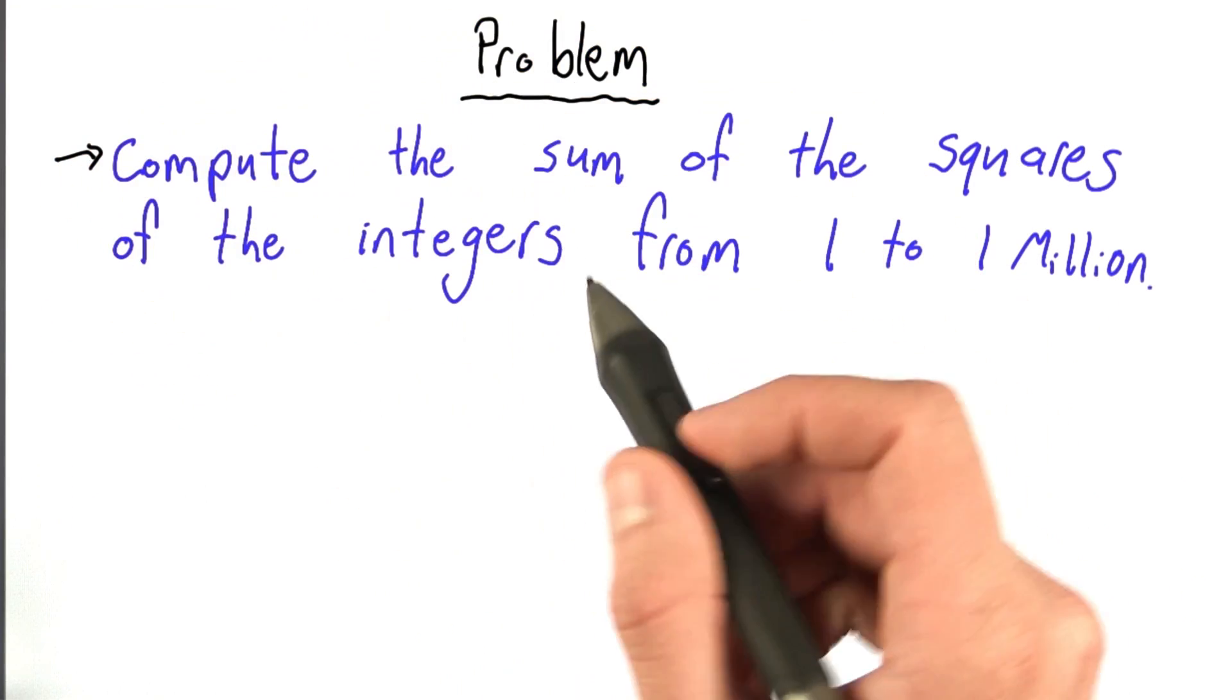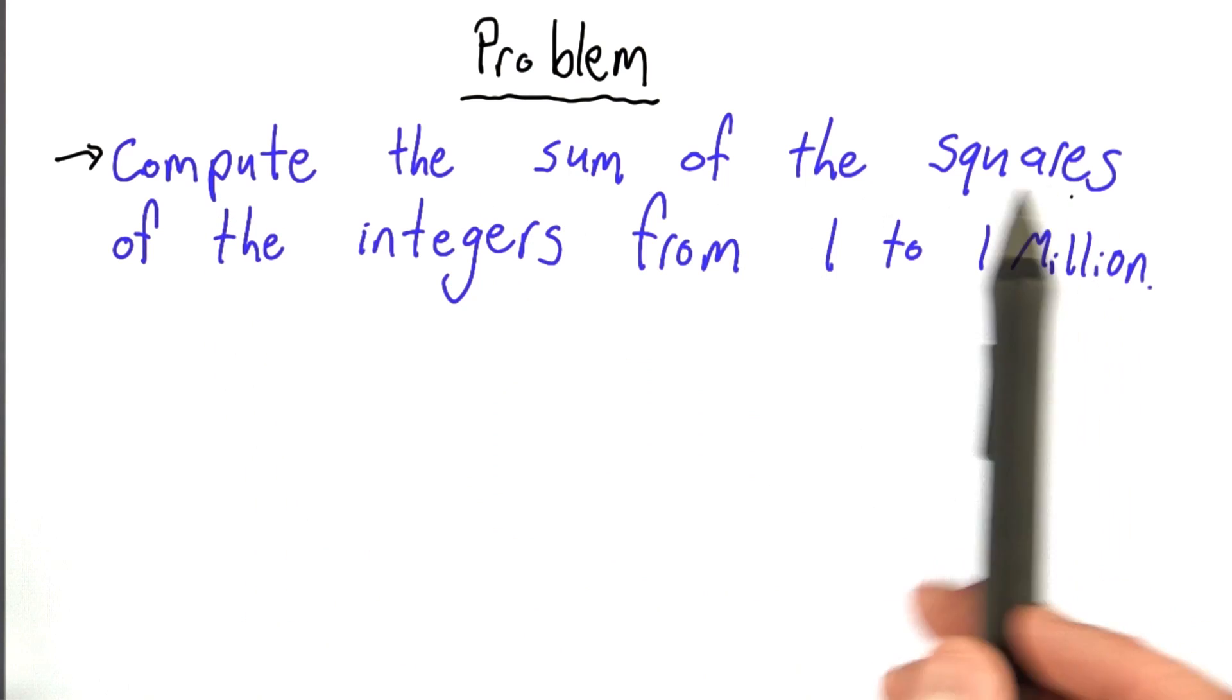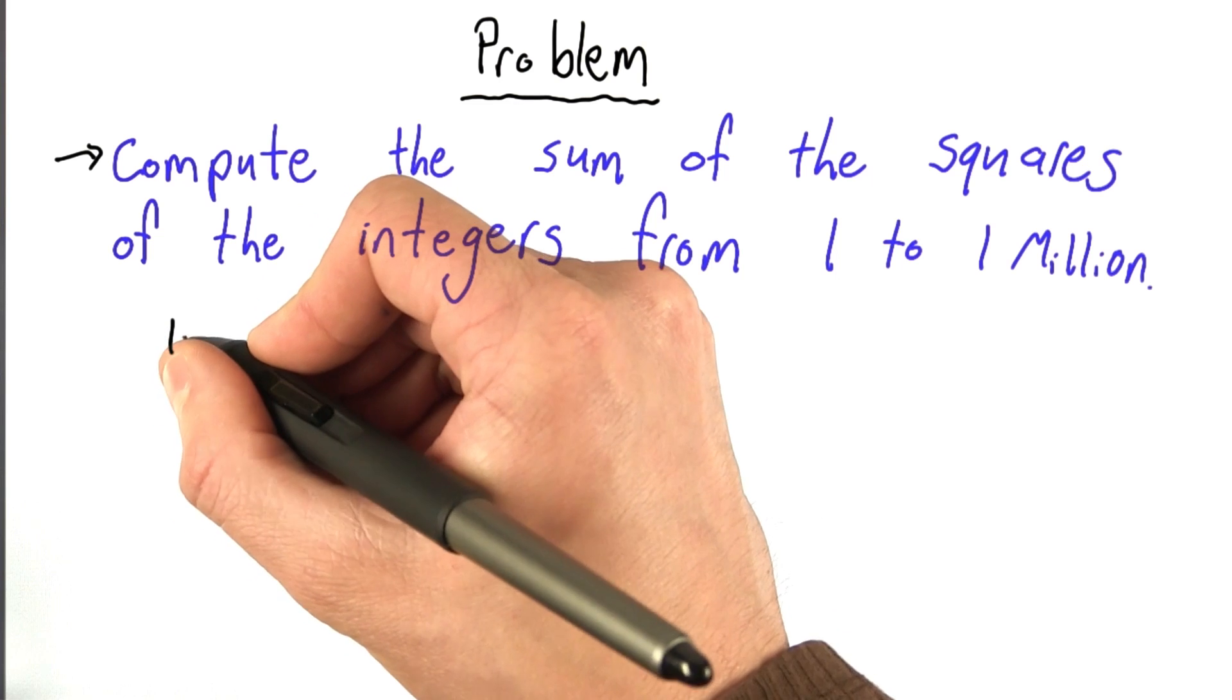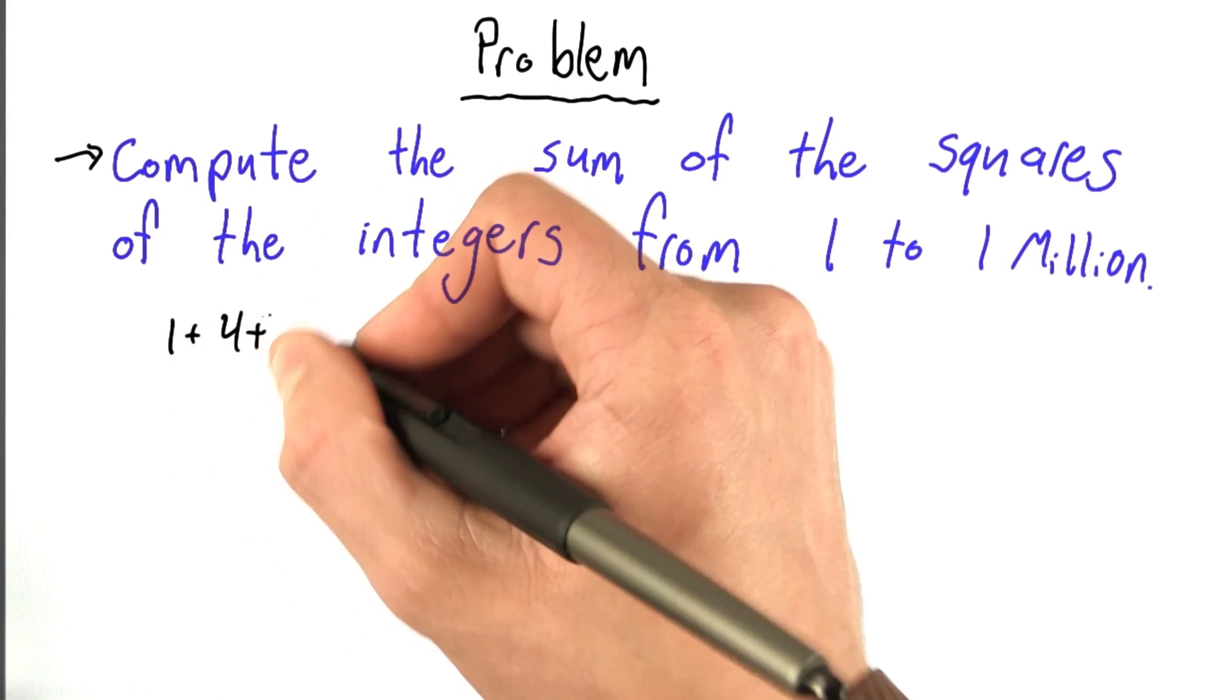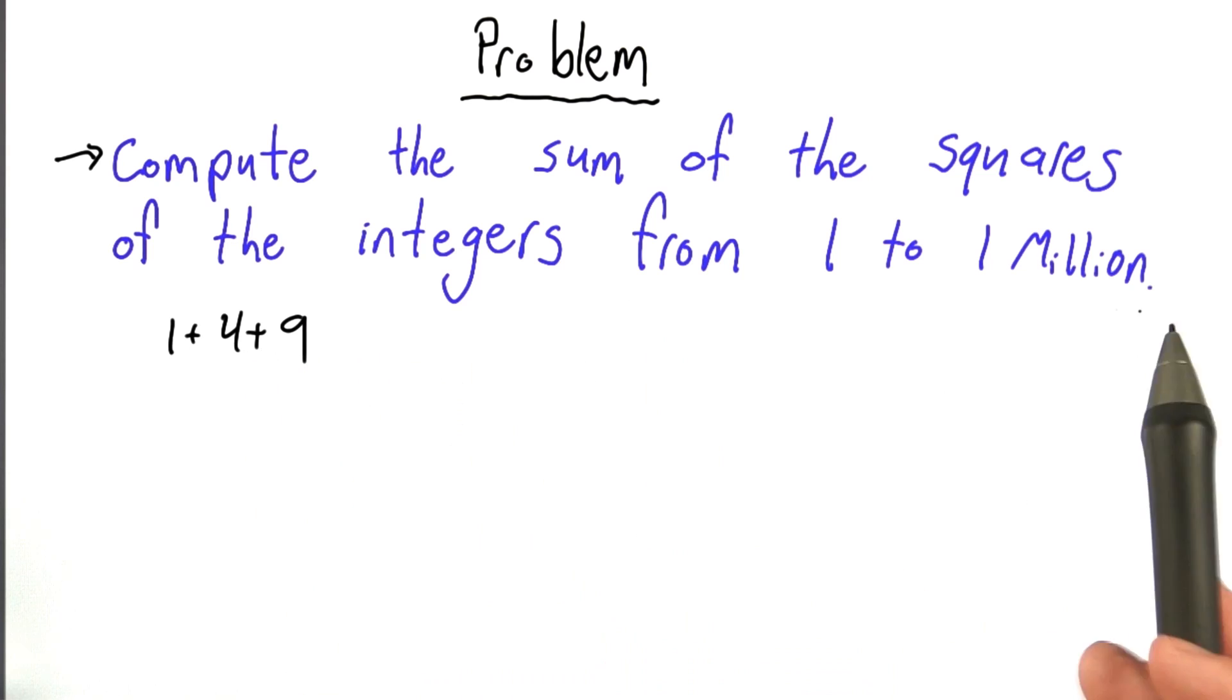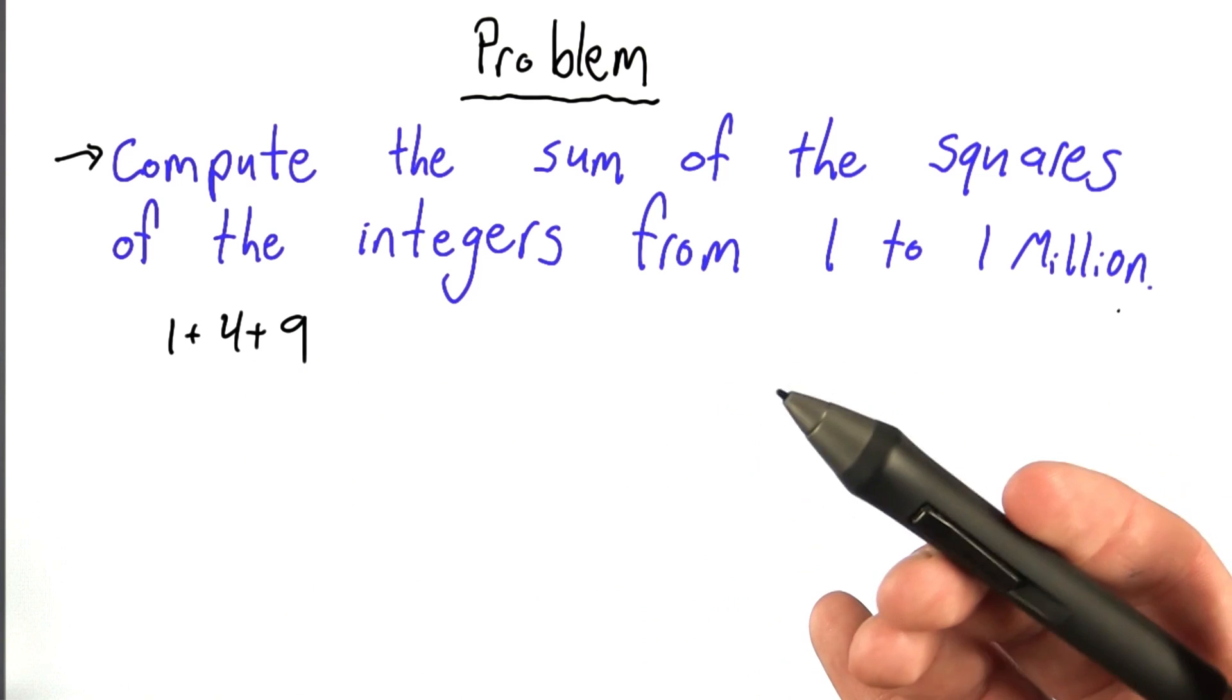Let's start with a problem. We want to compute the sum of the squares of the integers from 1 to 1 million. So that would be 1 plus 4 plus 9. And I probably shouldn't write all of these out. So, the question is, how would you do this?